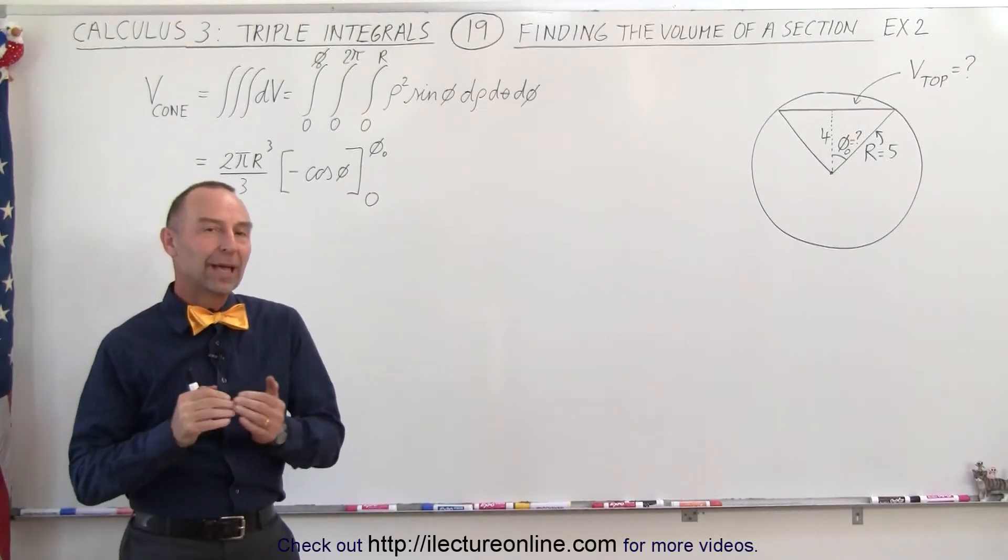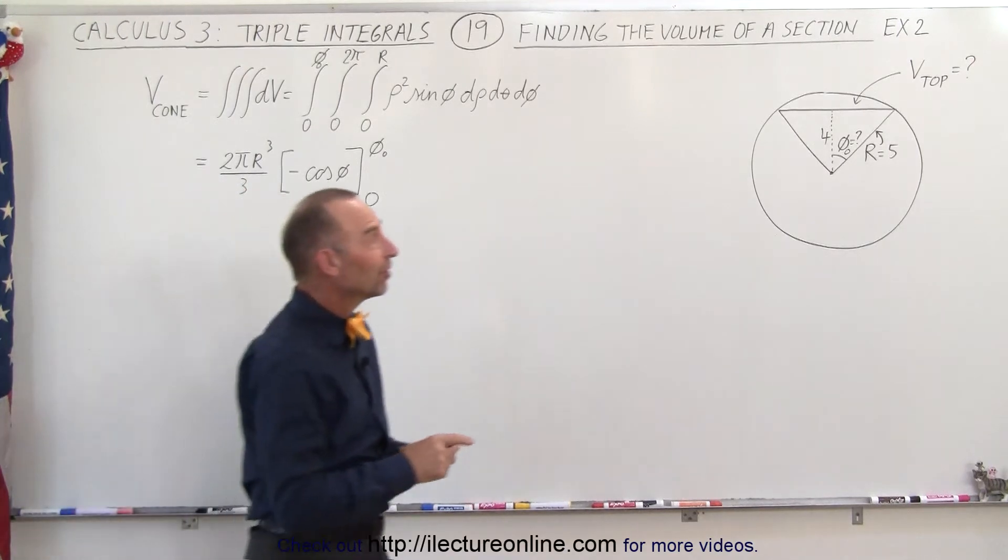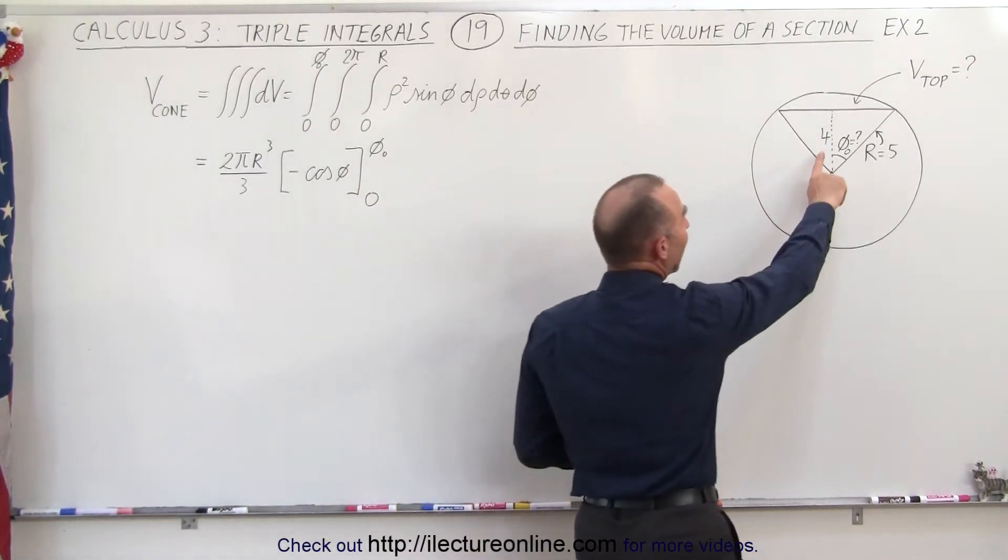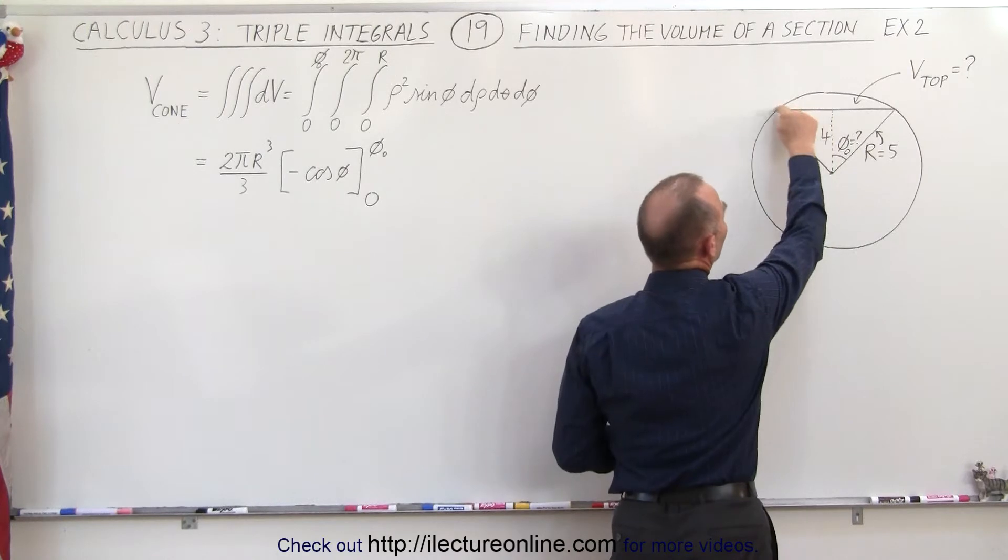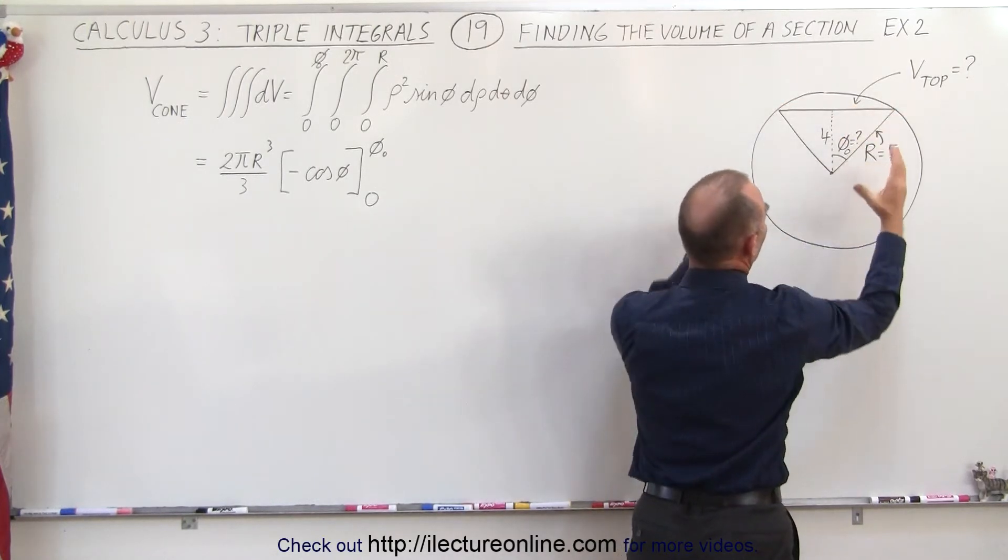Welcome to Electron Line. Here we have an example very similar to the previous one with the difference that instead of giving us the angle, they gave us the position or the distance of the line that cuts off that top portion of the sphere.